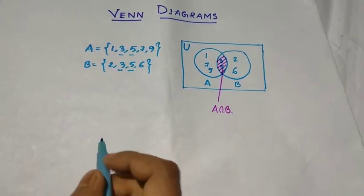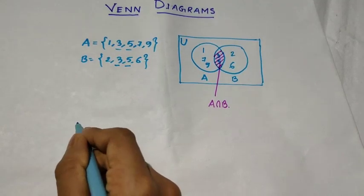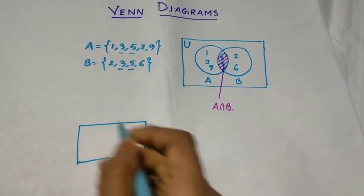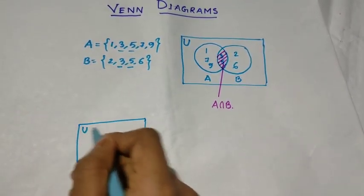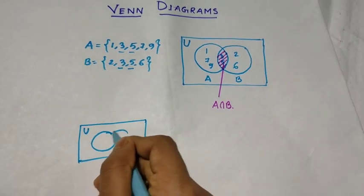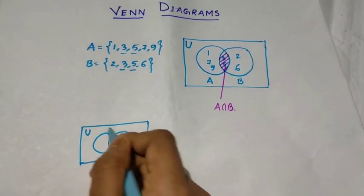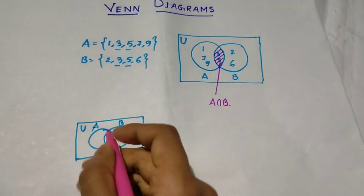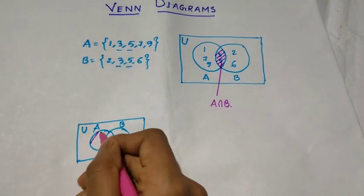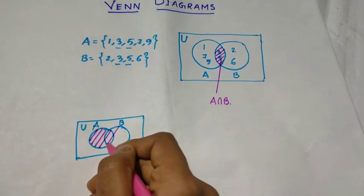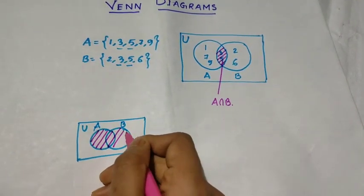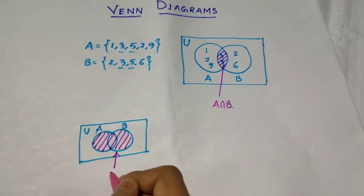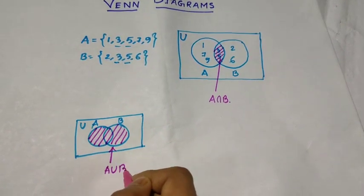Now let us see how to represent A union B. This is the universal set, this is A and this is B, and this whole region is known as A union B.